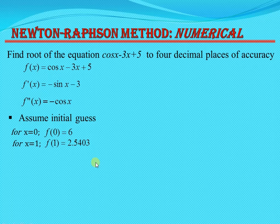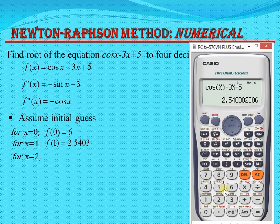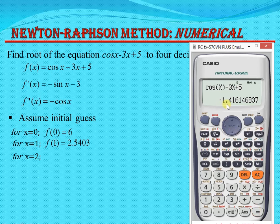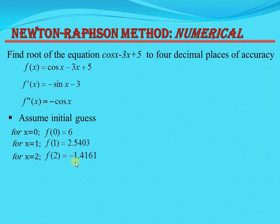Next, find the functional value for x = 2. Repeat the same steps — press equals, input 2, press equals. We get f(2) = minus 1.4161. So for x = 0 and x = 1 the values are positive, and for x = 2 the value is negative.